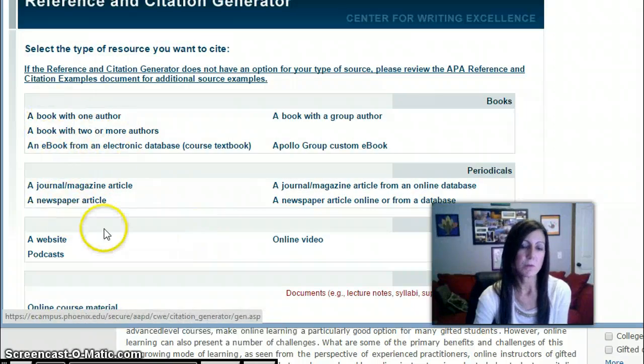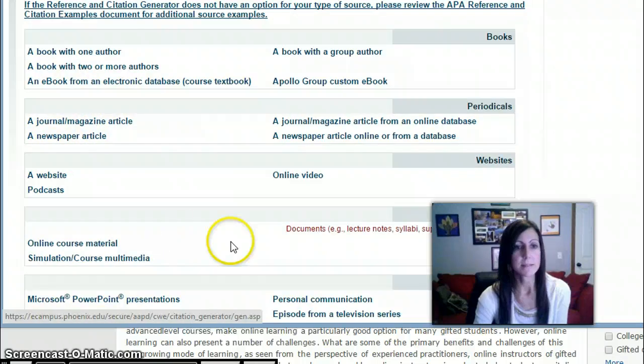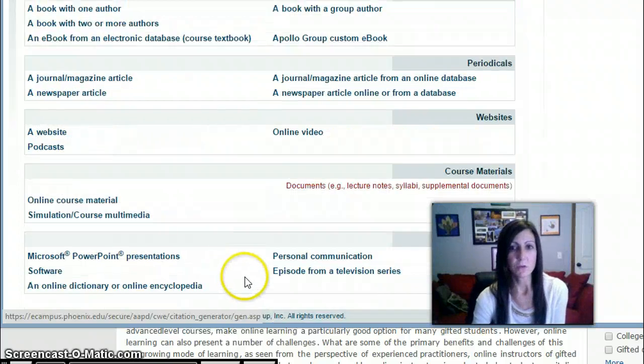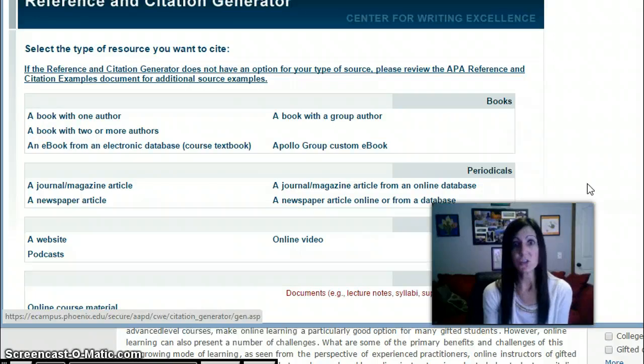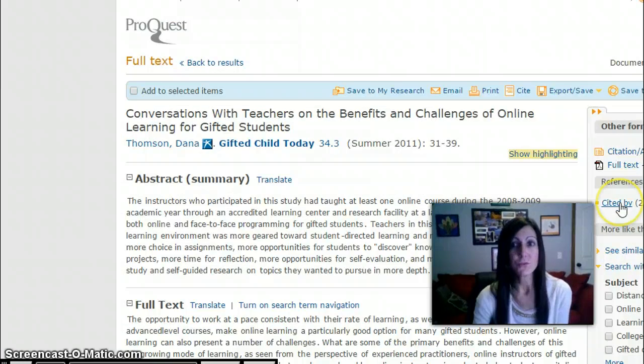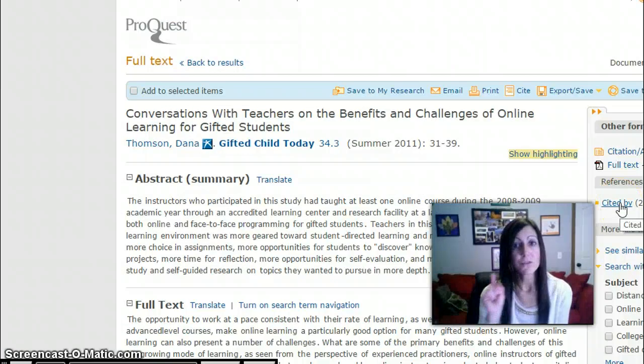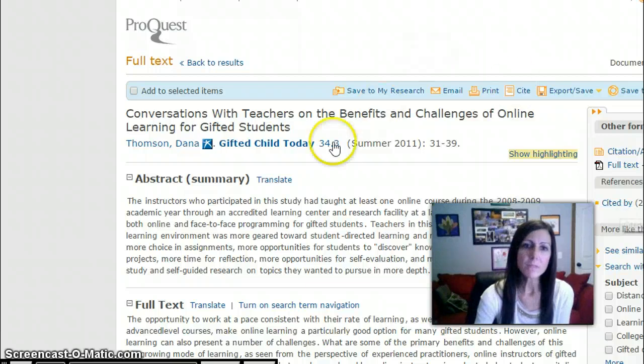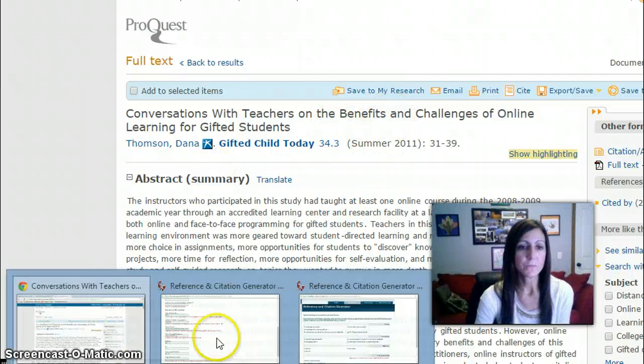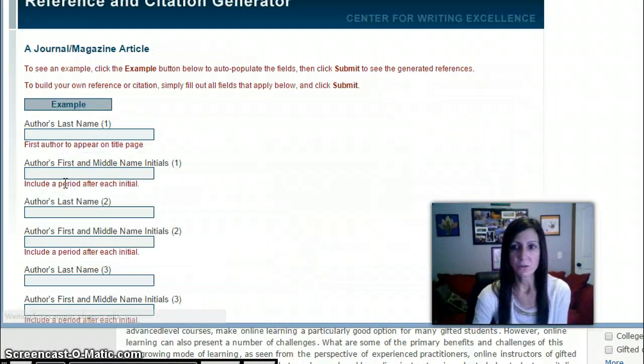That includes books, journals, newspapers, websites, podcasts, and then there's some more types down here. So I highly recommend finding a journal article. Journal articles are a little shorter obviously than books. Books are good too. Whatever you choose is just fine but be able to determine first of all whenever you choose a source you need to be able to decide what type of source it is. In this case I know that it is a journal article so I know that when I go to my reference generator I'm going to select journal magazine article.